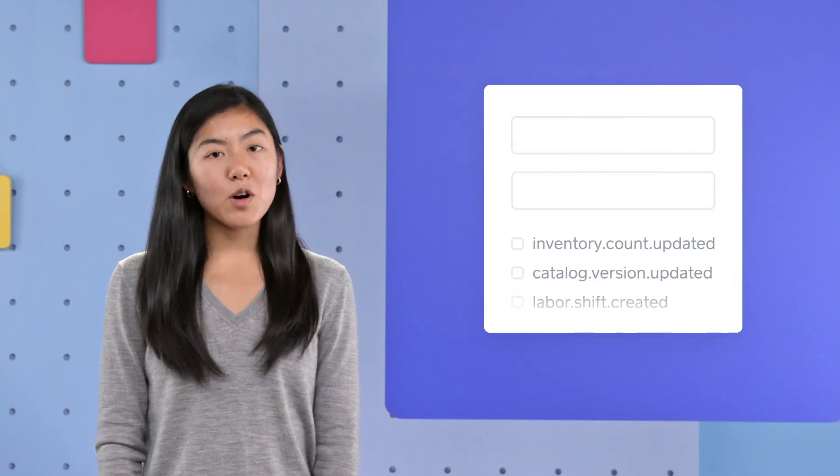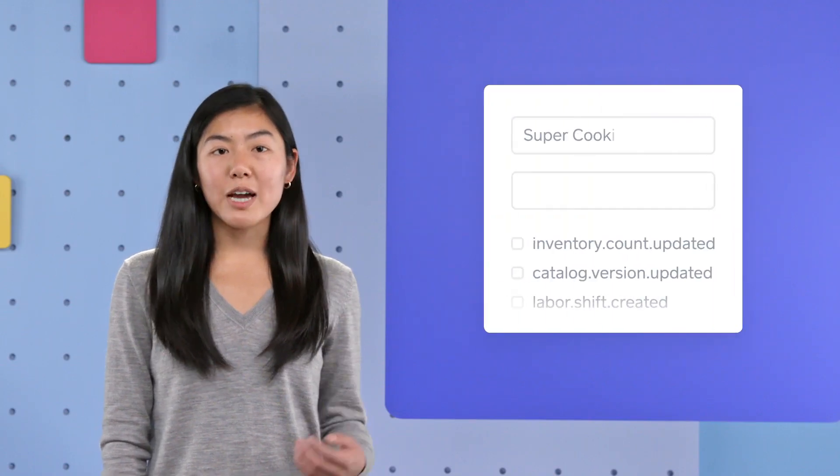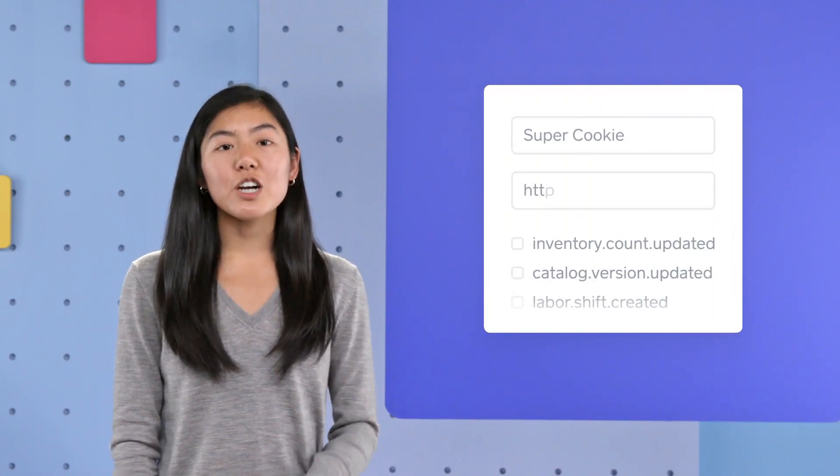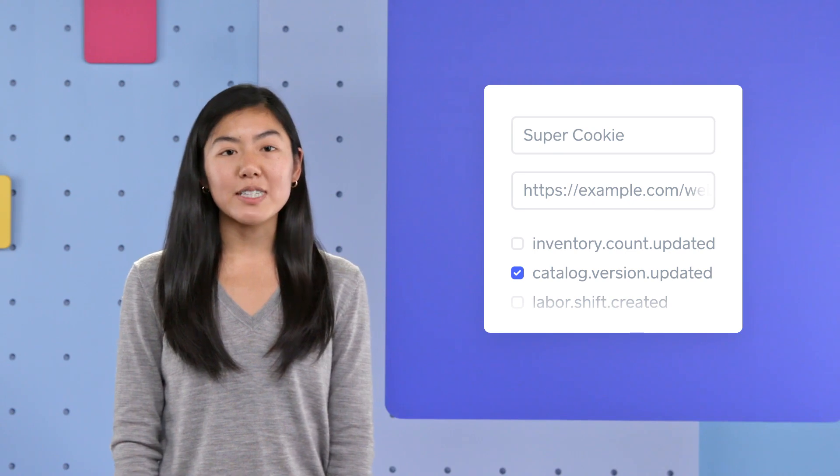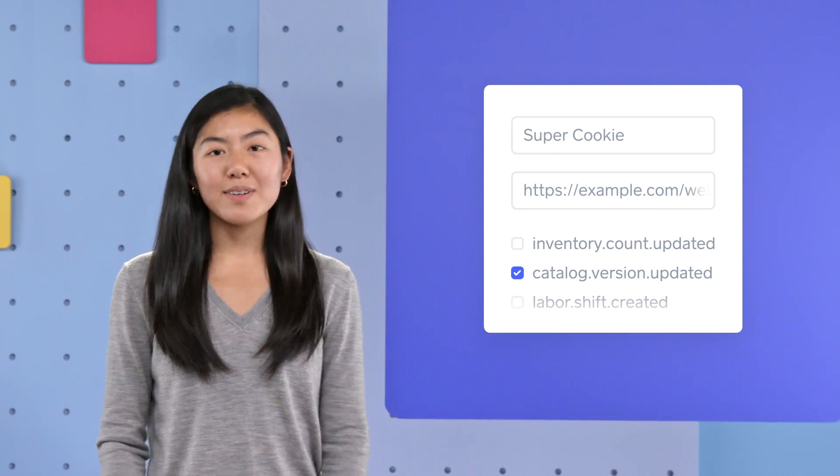Now that you know what a webhook is and how to use them, you're probably wondering how to set them up. The process of subscribing to different webhook events is super easy. In the developer portal, create a webhook endpoint, enter the target URL, and select the types of events that you want to receive.